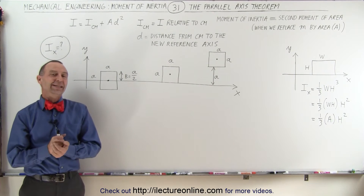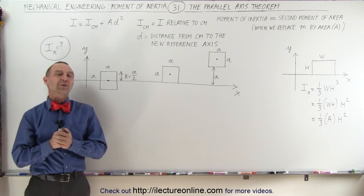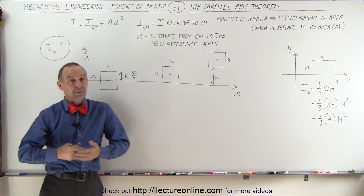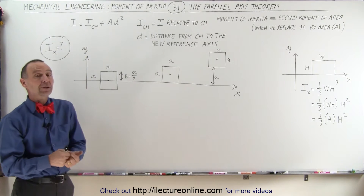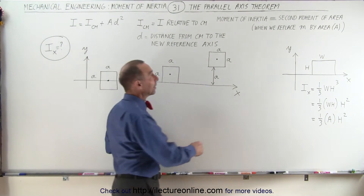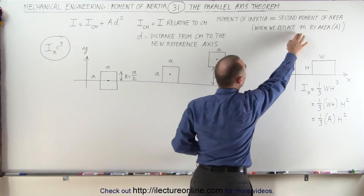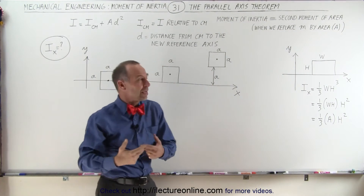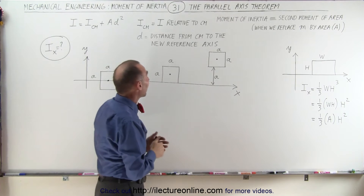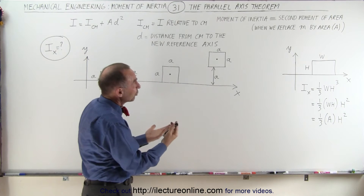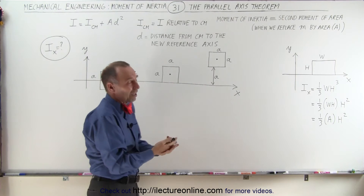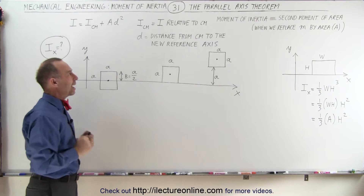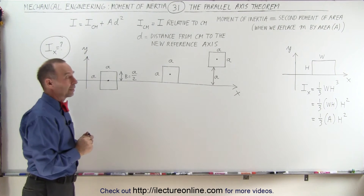Welcome to our lecture online. Now we're going to learn about the parallel axis theorem as it applies to the second moment of area, which, when we replace the area by the mass, we get the moment of inertia. So that's why we're going to find the parallel axis theorem relative to the moment of inertia, which is the same as saying the second moment of area, if we use area instead of mass.